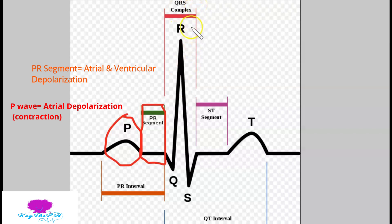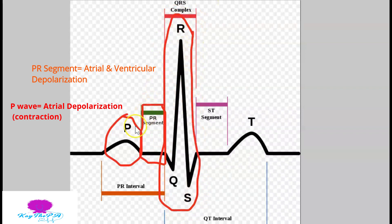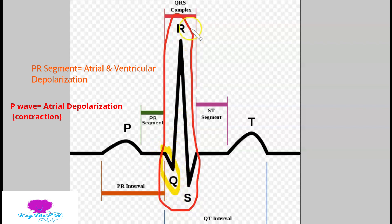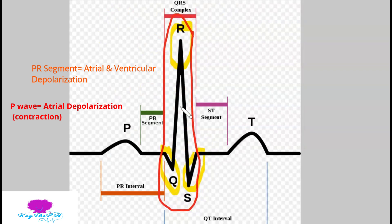Next we have our QRS complex, which has three different waves: the Q wave, the R wave, and the S wave. The QRS complex represents ventricular depolarization, also known as ventricular contraction.